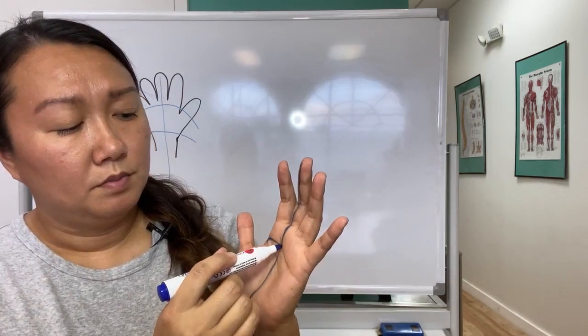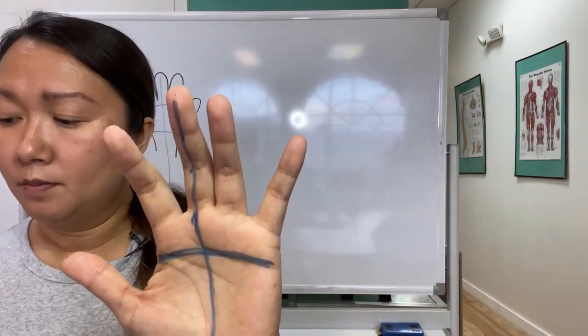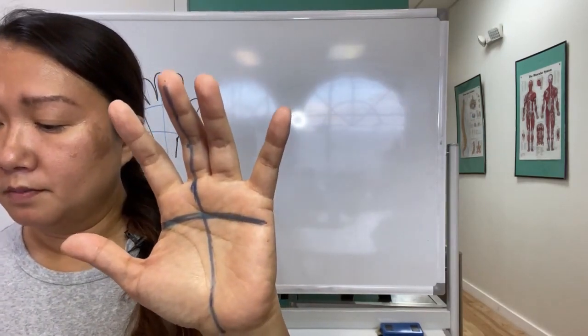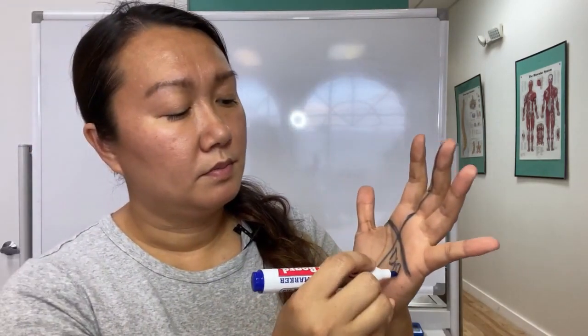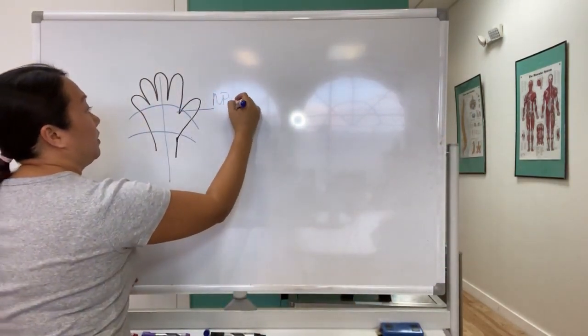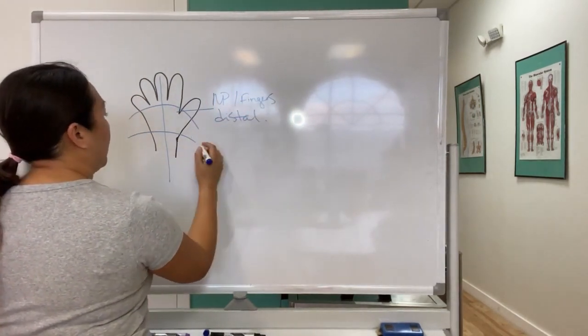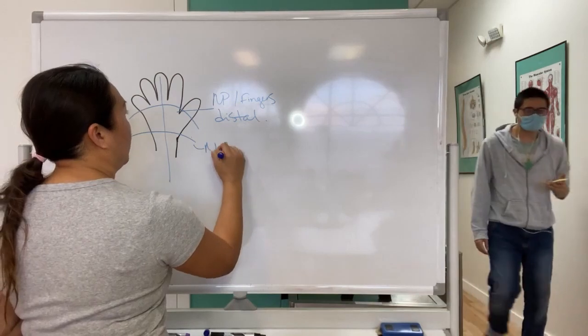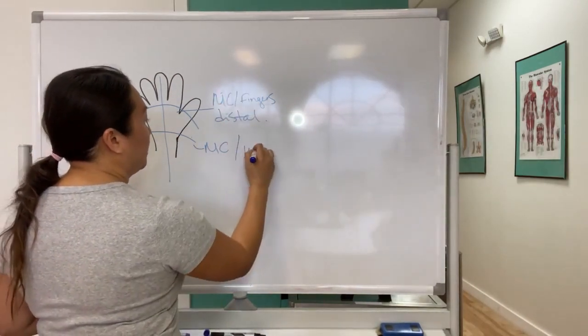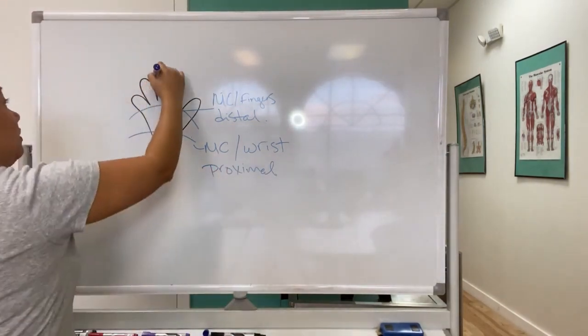And then it goes over, this is your distal transverse arch. This arch crosses the MPs - distal, so at your MP, your MP and fingers is your distal. And then here at your MC, your metacarpal, MC and wrist is your proximal transverse arch. And then here is your longitudinal.